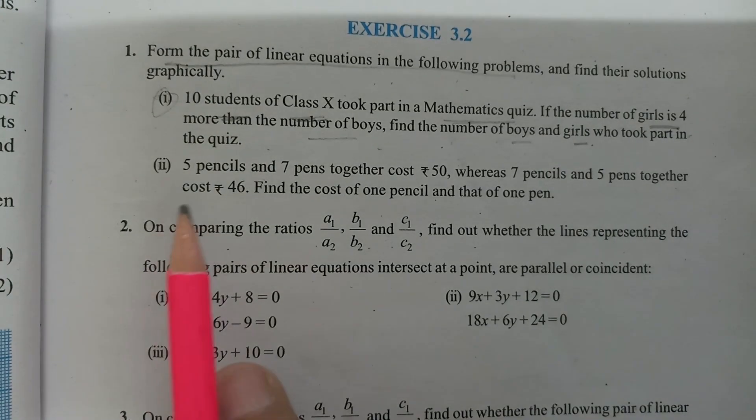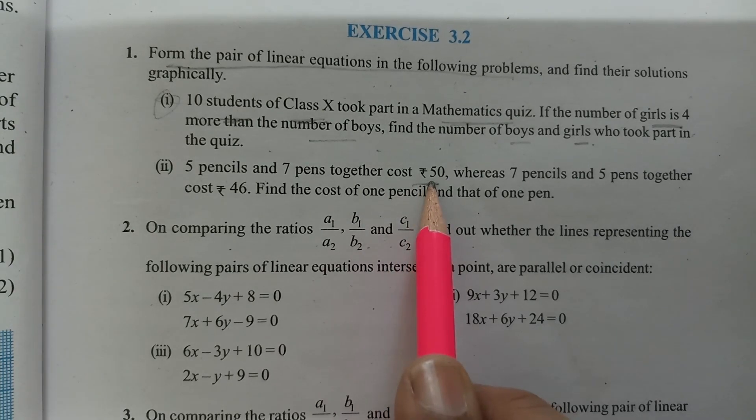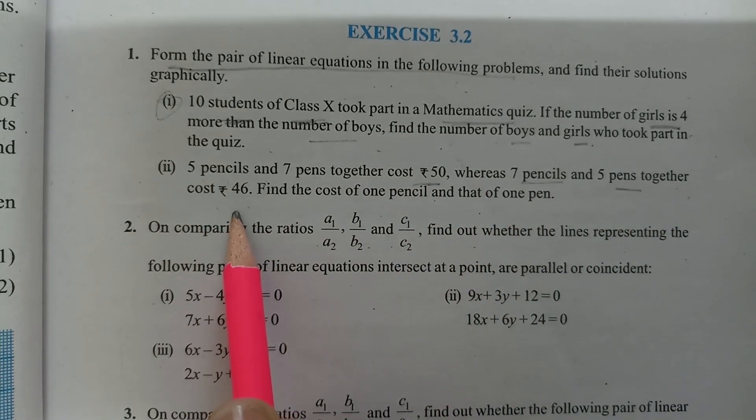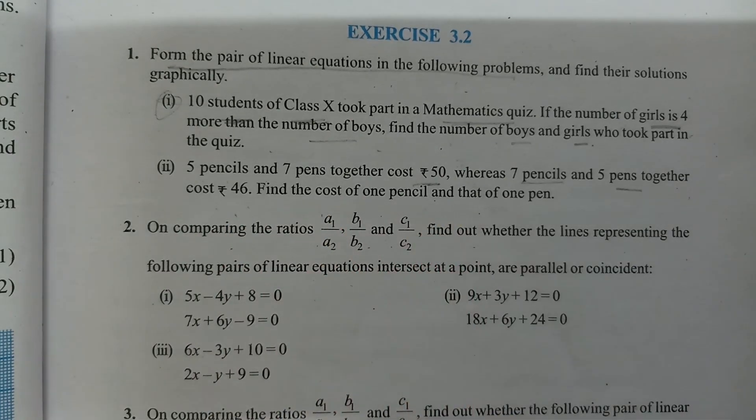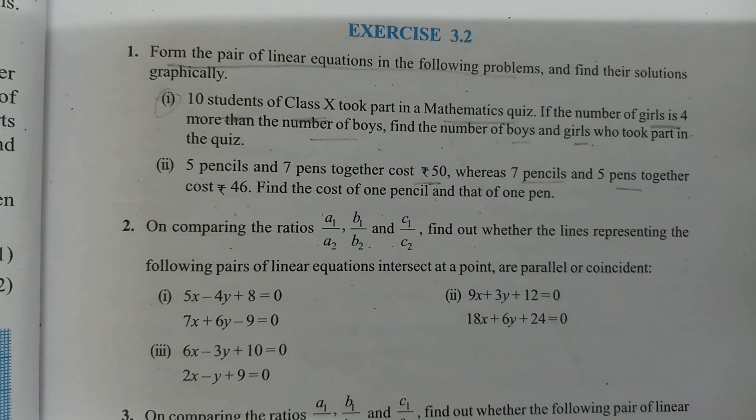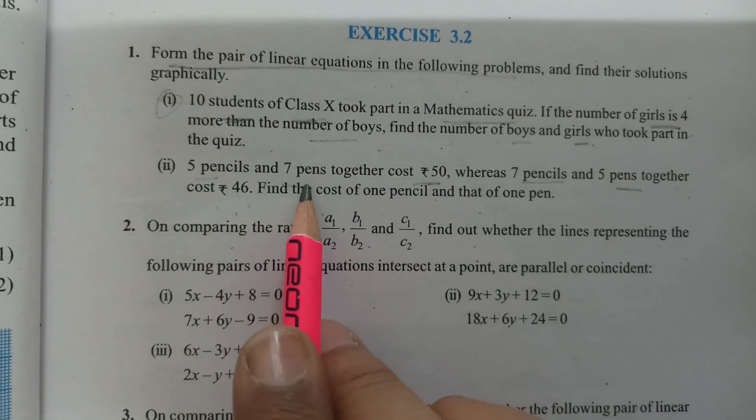Next one: 5 pencils and 7 pens together cost 50 rupees, whereas 7 pencils and 5 pens together cost 46 rupees. Find the cost of one pencil and that of one pen. We will not solve it graphically because that is not in our syllabus, so we will just make the equations.